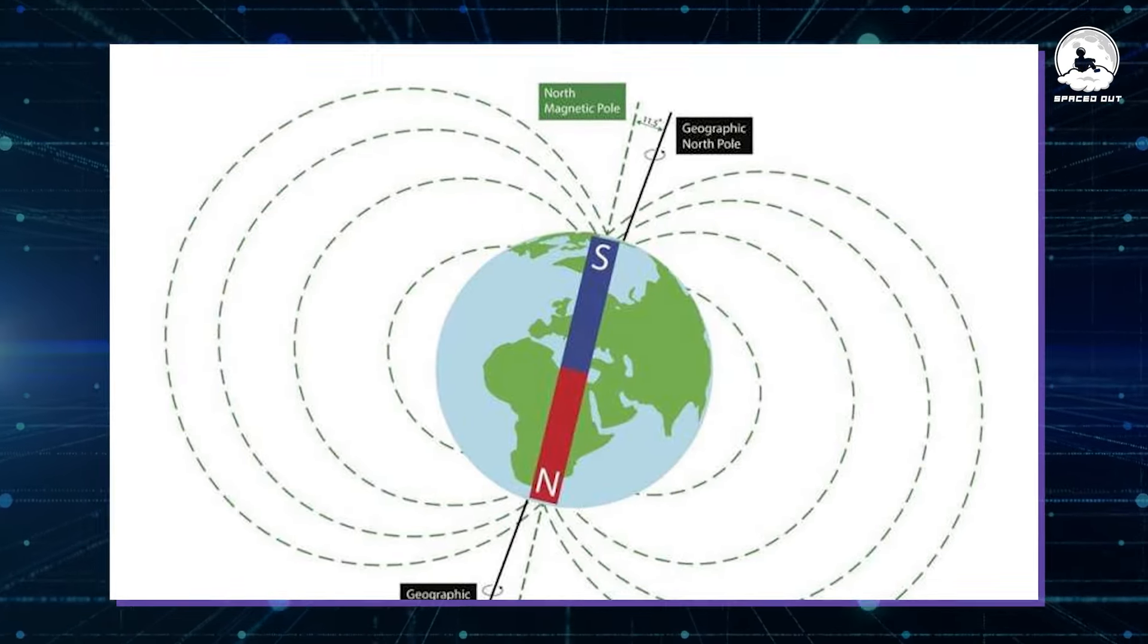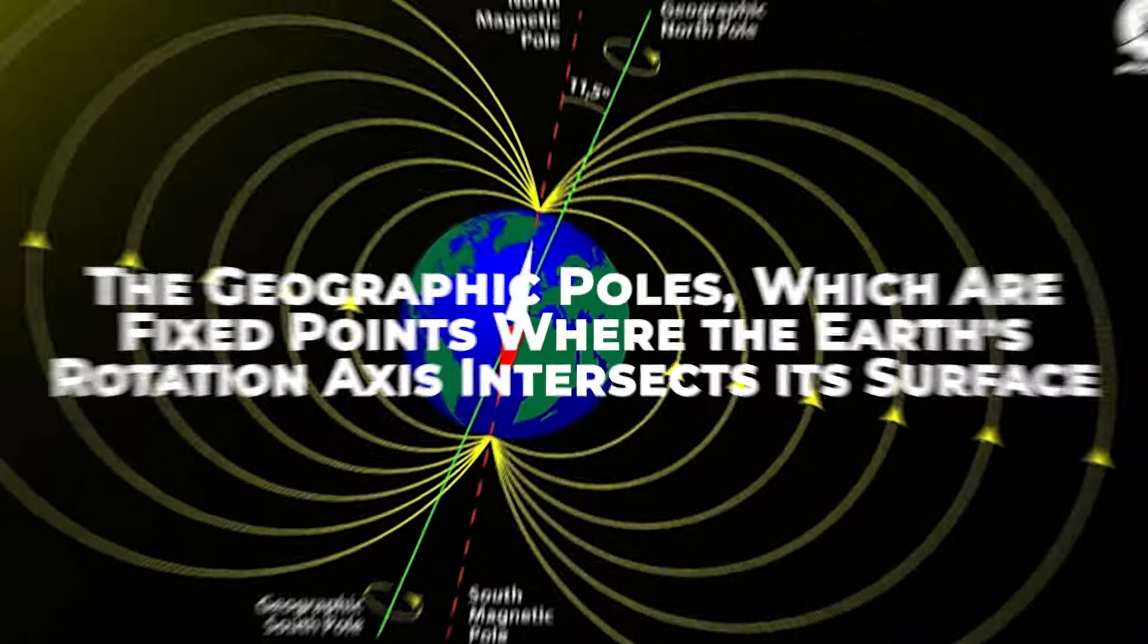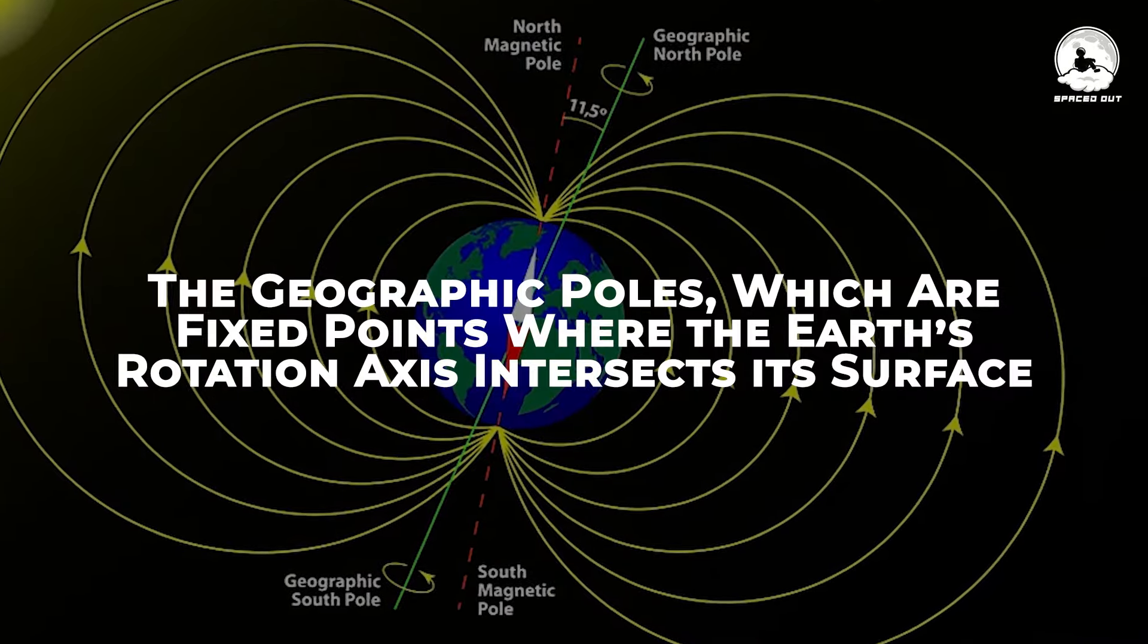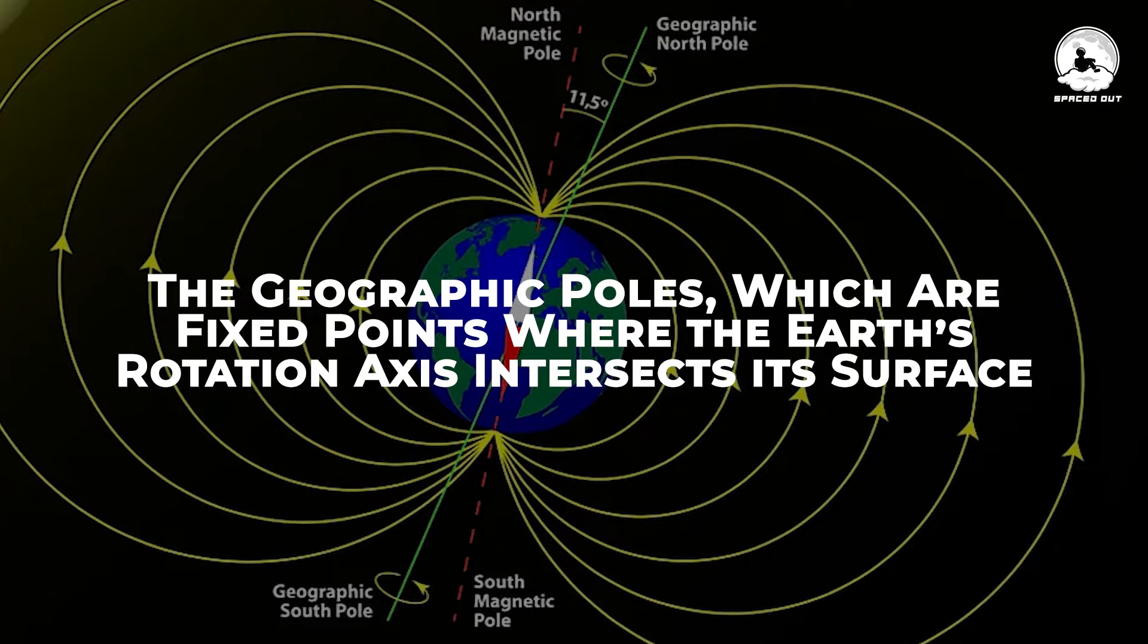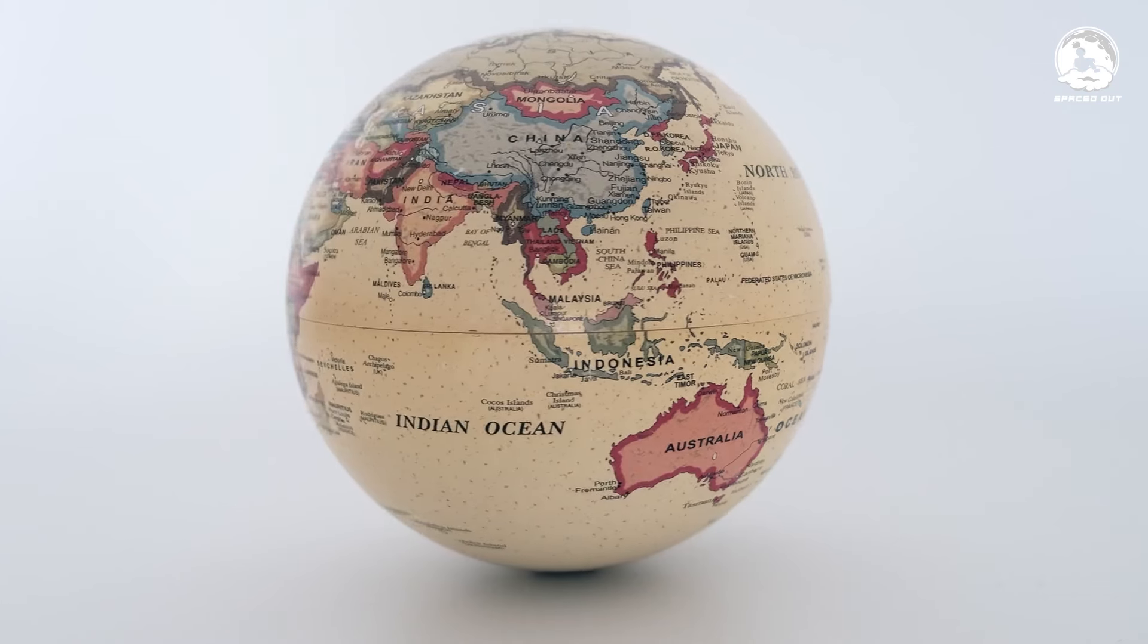You see, the Earth has two types of poles, geographic and magnetic. The geographic poles, which are fixed points where the Earth's rotation axis intersects its surface, define our maps as the permanent north and south.